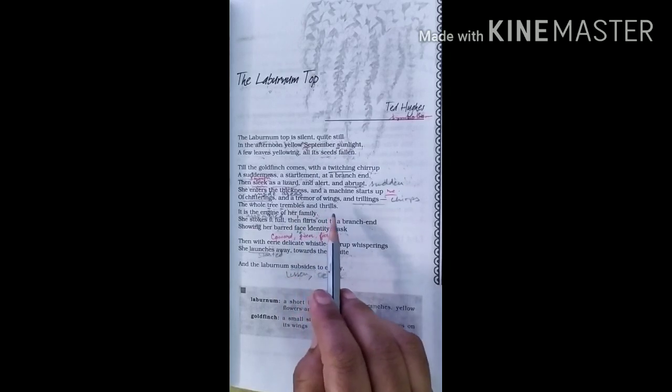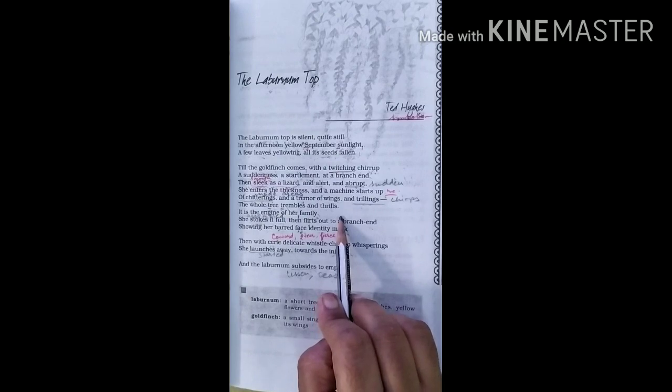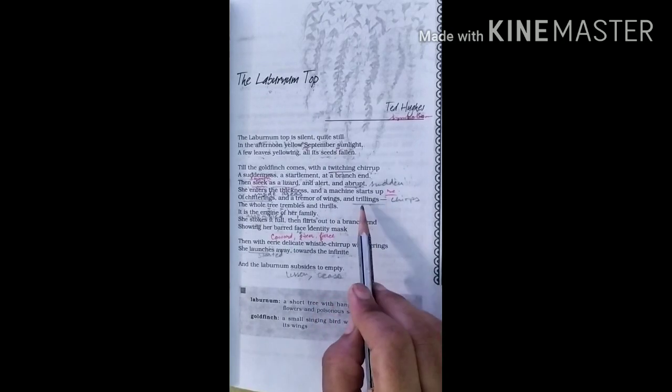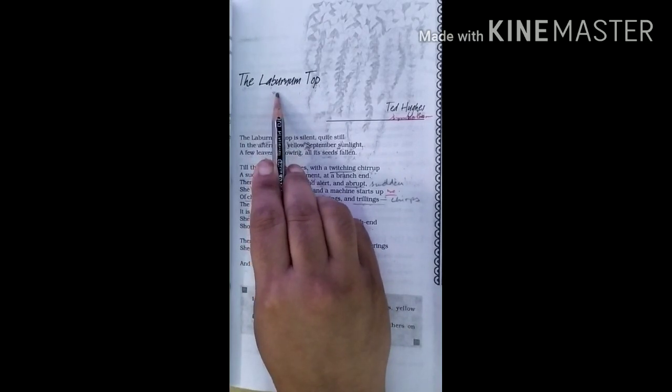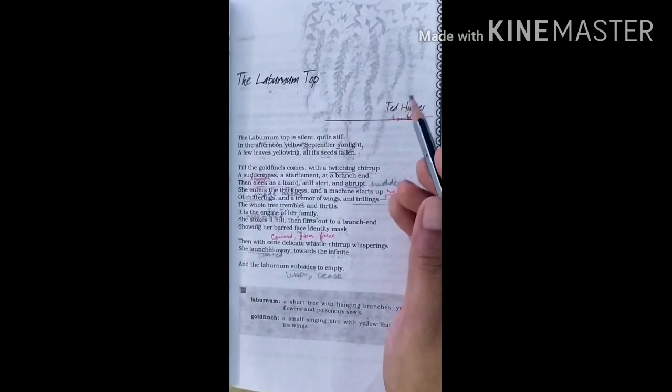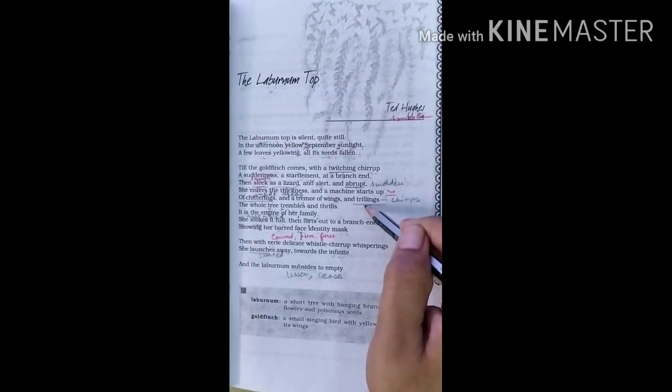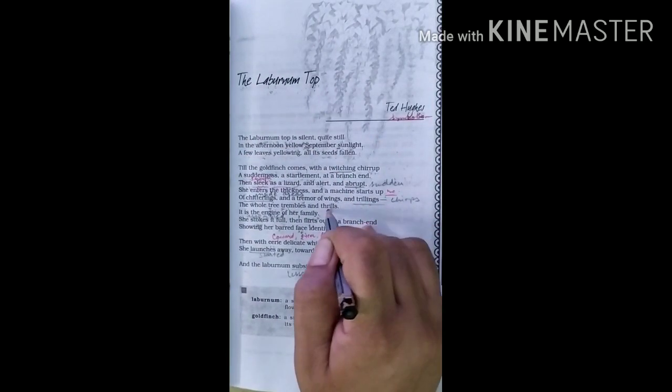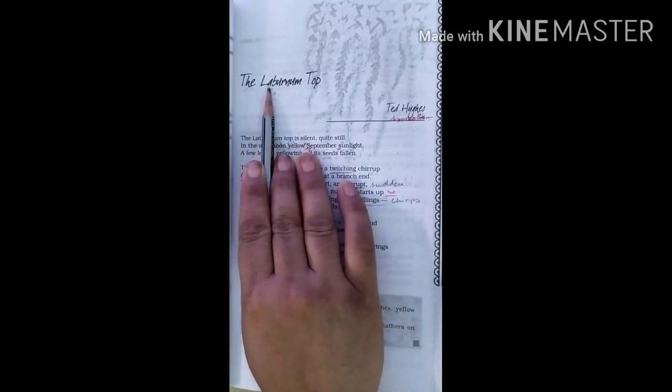Then we see personification. Personification, you know personification where inanimate objects are given human traits. So the whole tree, Laburnum tree is full of personified. Here the tree is personified. Trembles, thrills, these are the words which are used to personify Laburnum tree.